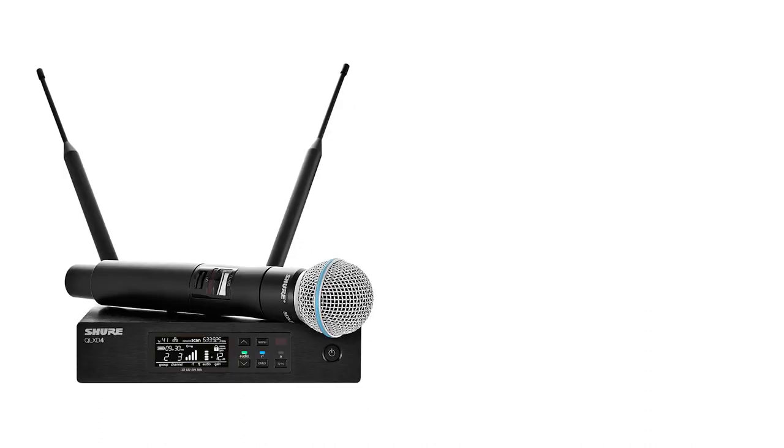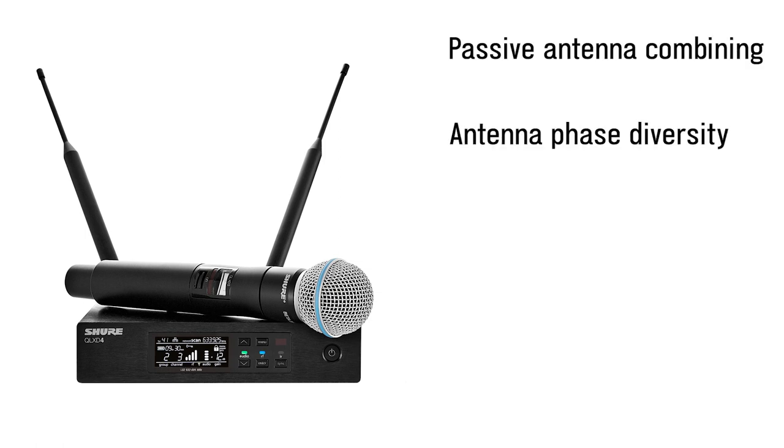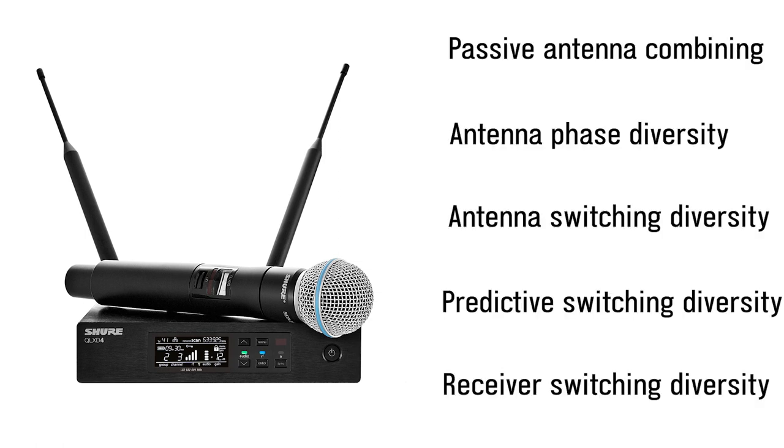Secondly, most modern wireless systems use some type of diversity, which is a very fancy word for avoiding dropouts by using two or more antennas at different locations. There are lots of different types of diversity, but having more than one antenna is always the key.